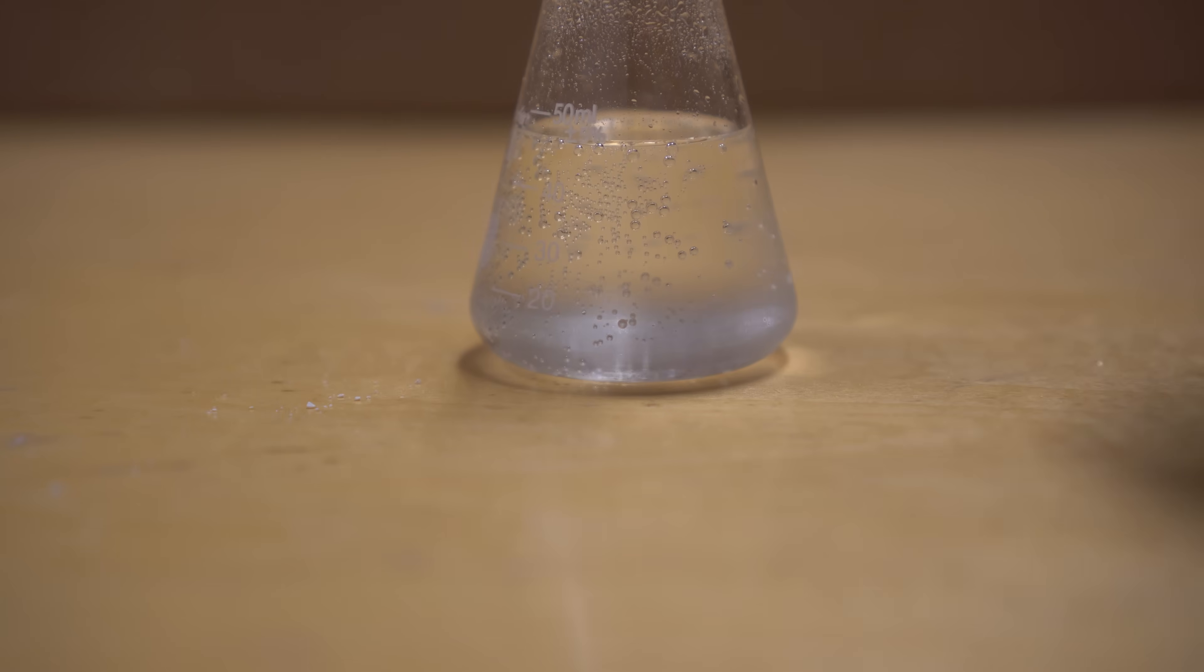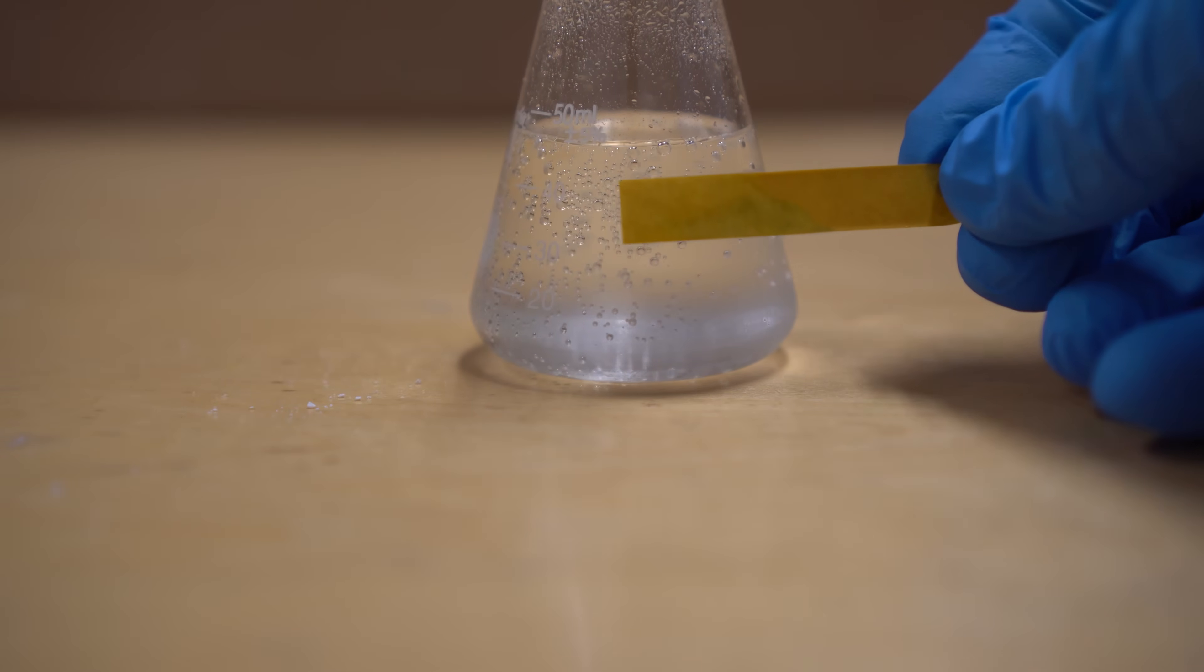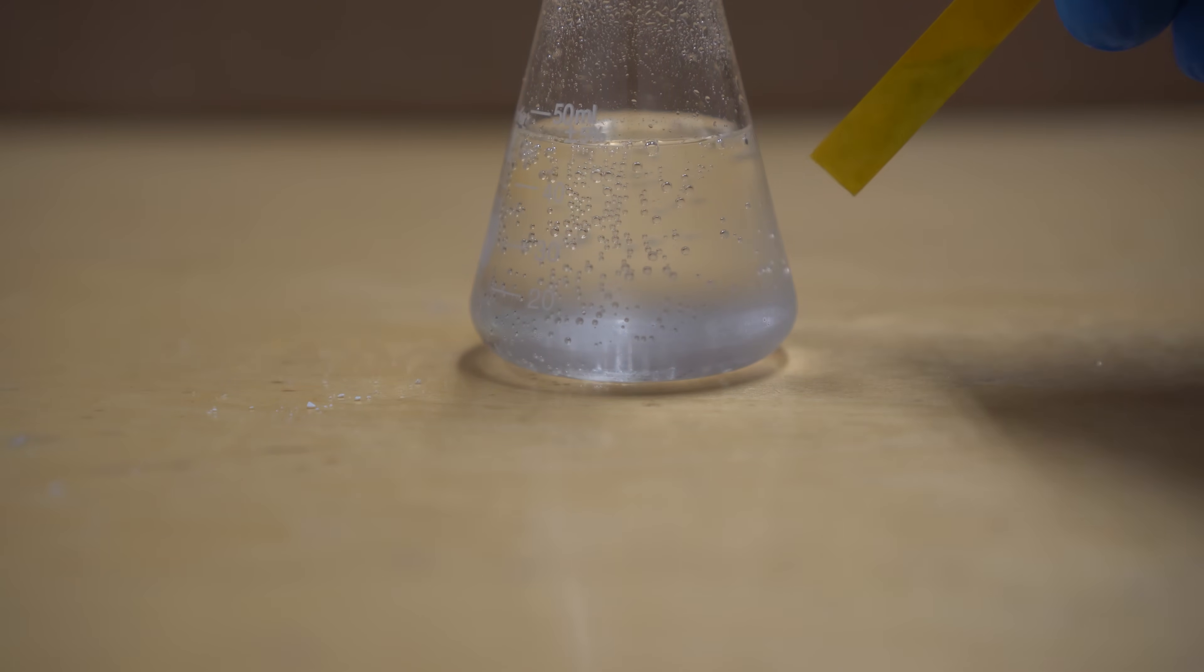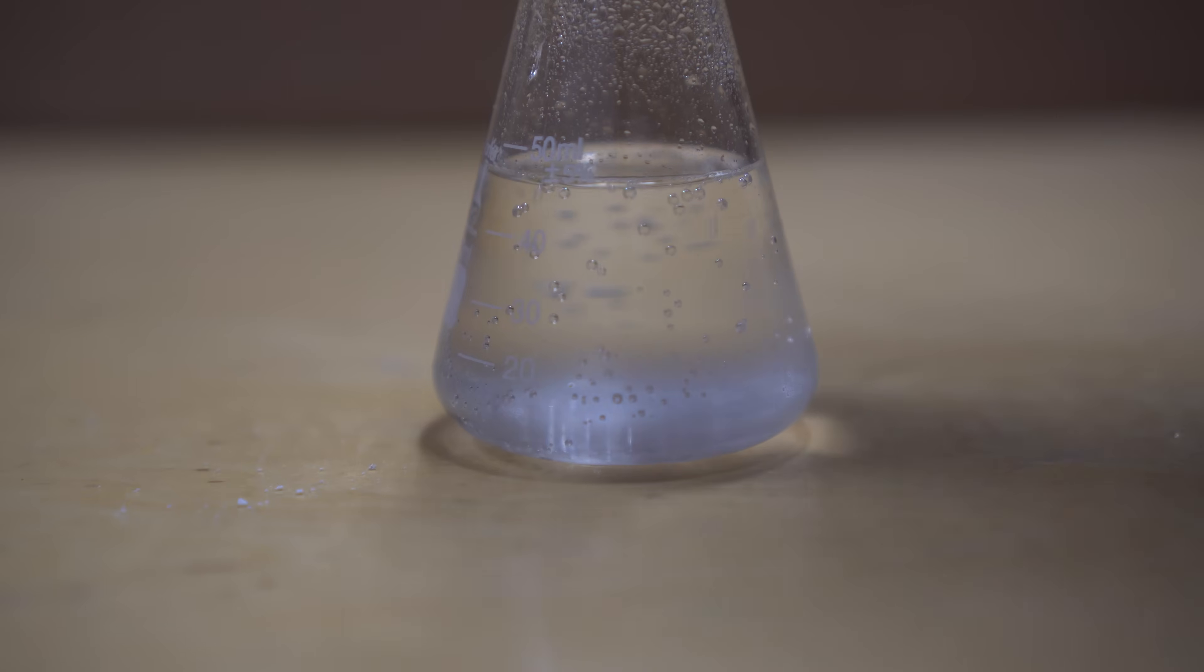Occasionally I would swirl the flask to make sure that everything was mixed thoroughly, and then I needed to check the pH with the universal pH paper. When I checked the pH of the solution, it was not acidic at all. In fact, it was slightly alkaline still. So I decided to add more concentrated hydrochloric acid into the solution to make it acidic. This, I hoped would precipitate it out.